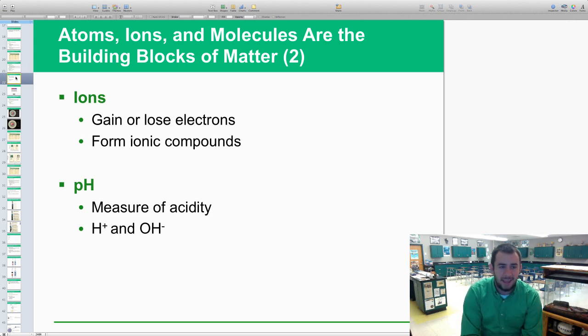Ions—they are molecules that gain or lose electrons and they form ionic compounds. We'll talk about some of the major ones that we deal with mainly in AP environmental science. The pH scale is a measure of acidity. If it has hydrogen ions, then it is more acidic. If it has hydroxide ions, then it is more basic. That's the simple form on pH as well as ions.